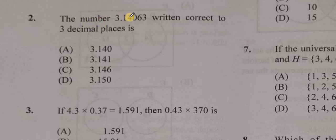The number 3.14063 written correct to three decimal places is which of these options? Well, since we're correcting to three decimal places, it means that our answer should have three digits after the decimal point.